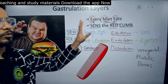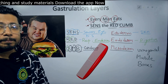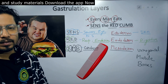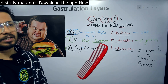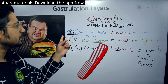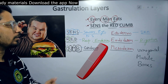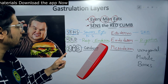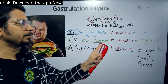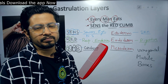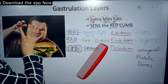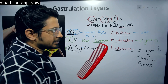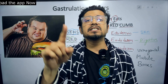From these two sentences, we are successfully capable of identifying which different systems of the body are originated from which germ layers. For ectoderm — SENS — sensory system, nervous system, skin. Endoderm — RED — respiratory system, endocrine system, digestive system and the linings of the respiratory system. CUMB for mesoderm — cardiovascular system, urogenital system, muscular system, and bones. By knowing 'every man eats' and 'sense the red cumb,' we can understand the gastrulation layers and the systems they originate within 7 minutes.